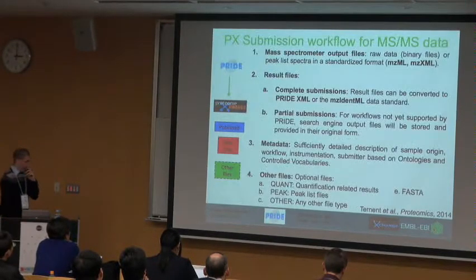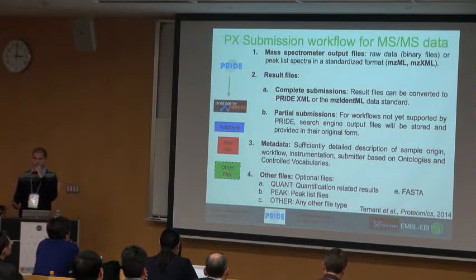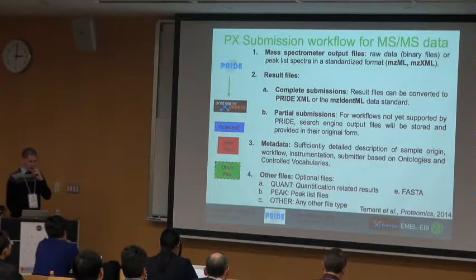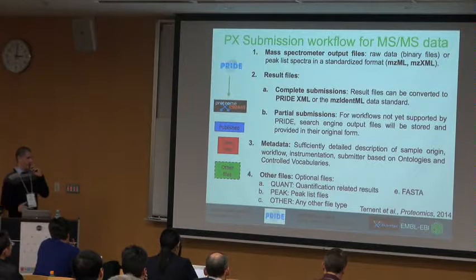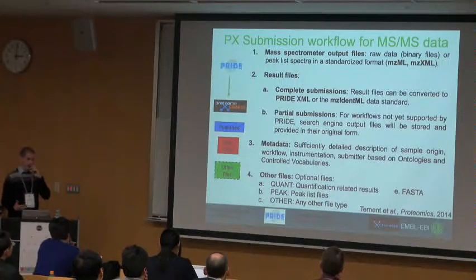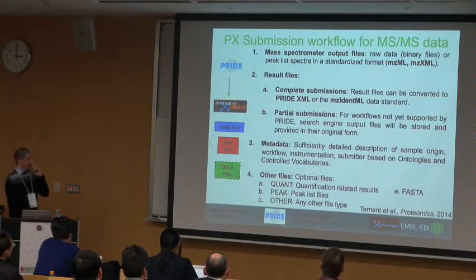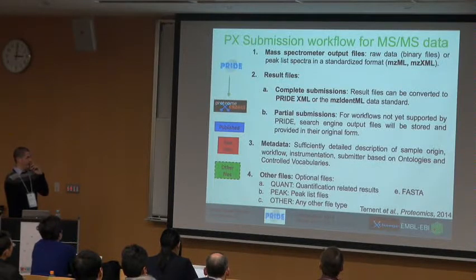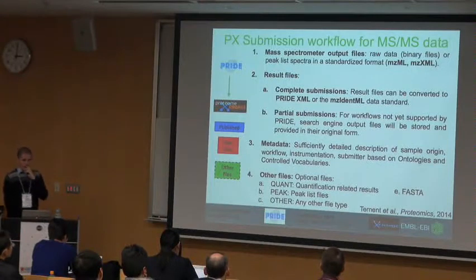The submission process can be done in two ways. A partial submission, where basically just the raw data is submitted to ProteomicsExchange. And a complete submission, where you can submit your peak list and also the final results. For a complete submission, the files must be based on standards — currently mzIdentML and mzTab, but in the future also mzTAB.